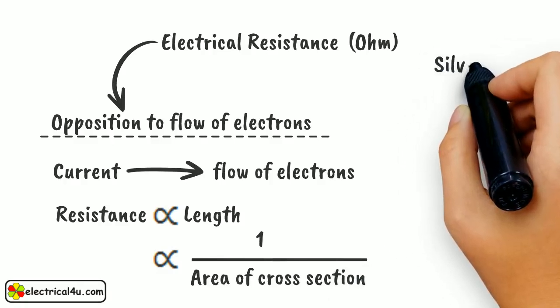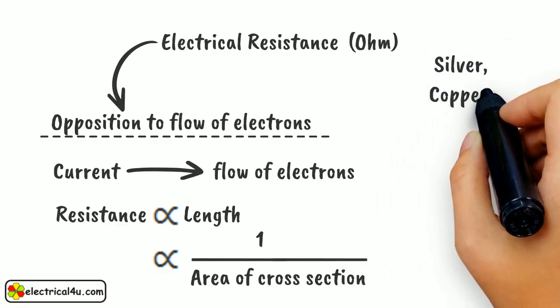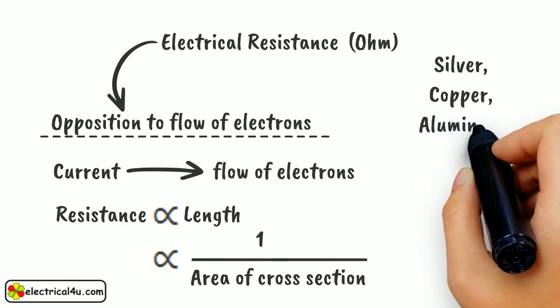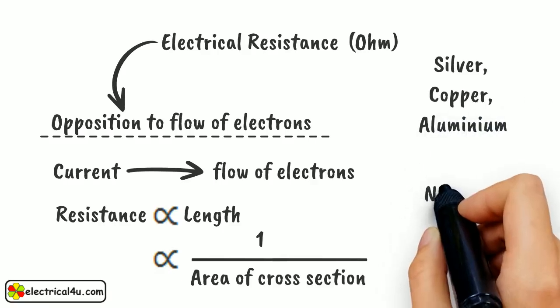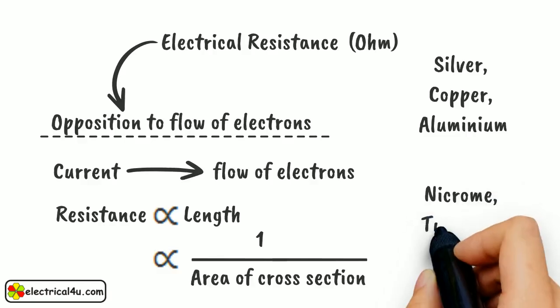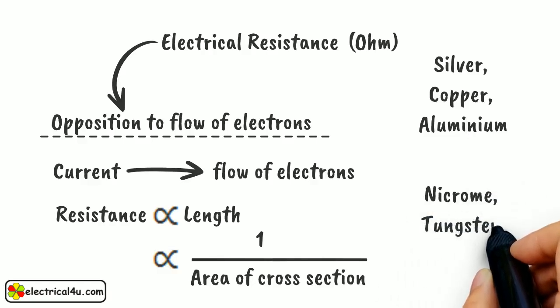The resistance offered by conducting materials like silver, copper, and aluminum is low, whereas resistance offered by some other conducting materials like nichrome, tungsten, etc., is very high.